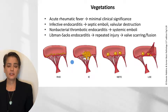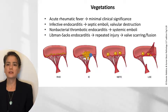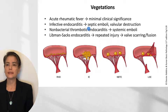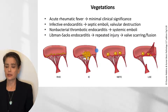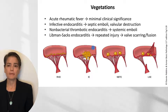By contrast, in infective endocarditis, we can get large, friable vegetations. These can flick off into the circulation, resulting in septic emboli, which can have profound consequences for your patients. You need to be able to recognize the clinical signs and symptoms so that you can treat the patient appropriately. These vegetations can also destroy the valve, which can lead to acute regurgitation.